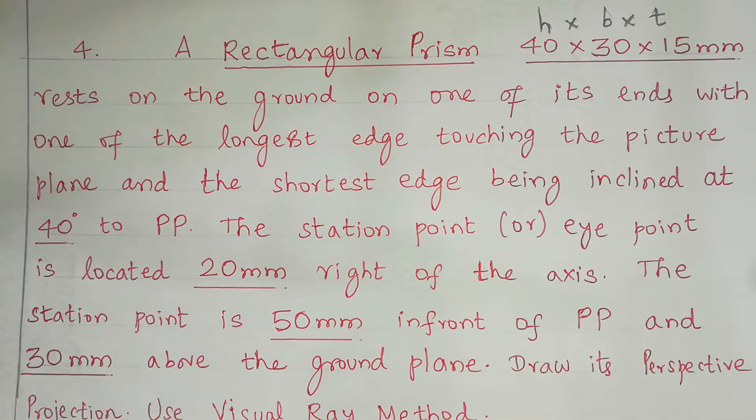A rectangular prism 40 x 30 x 15 mm, that is height x breadth x thickness. This is the designation. Height is 40 mm, breadth is 30 mm, and thickness of the rectangular prism is 15 mm.